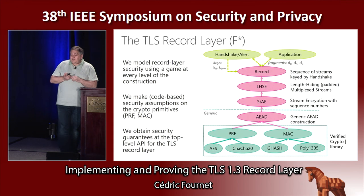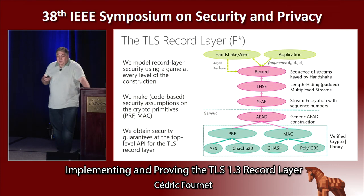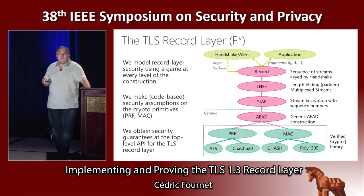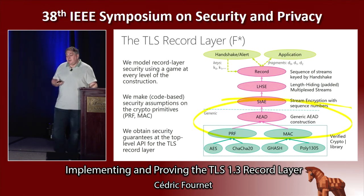This depicts the TLS record layer as we model its modular structure in F*. At each level, we start from the crypto primitives and verify implementations of those primitives. Then we build up to authenticated encryption, then stateful stream encryption on streams of fragments, then length hiding and multiplexing between streams, then management of multiple keys in the record layer, and then the higher-level protocols for the handshake and application. For the rest of the talk, I'll focus on one layer: the stateful stream encryption built out of a PRF and a one-time MAC.